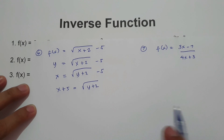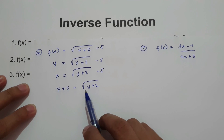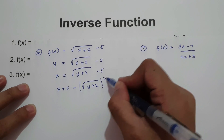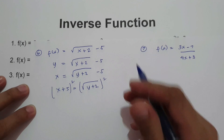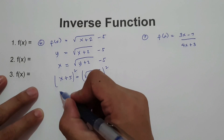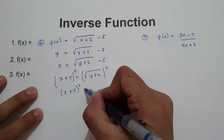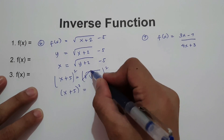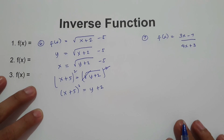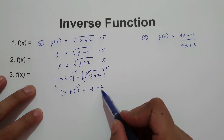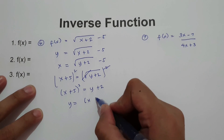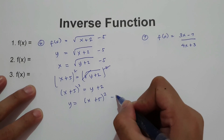To express this equation in terms of y, we need to cancel the radical sign by squaring both sides. We have the quantity x plus 5, squared, equals y plus 2 — canceling the radical sign and exponent. Then move 2 to the other side: y equals x plus 5 squared minus 2.